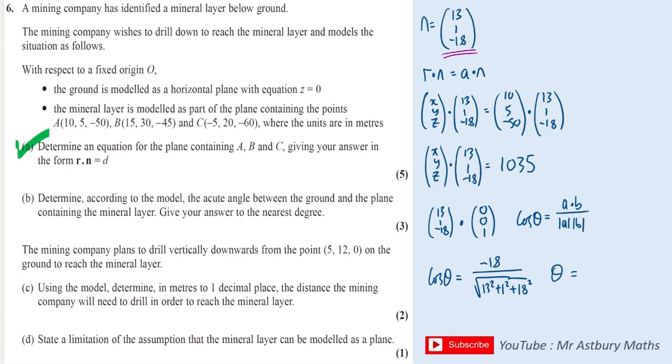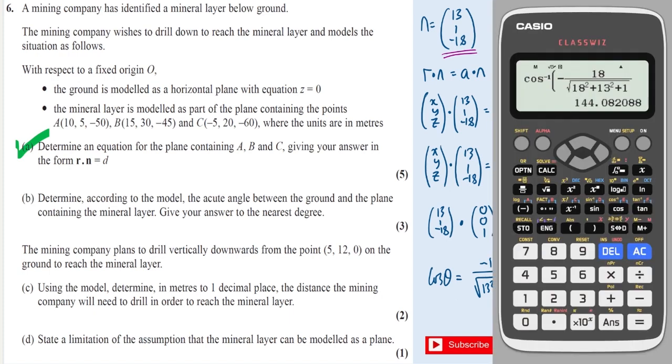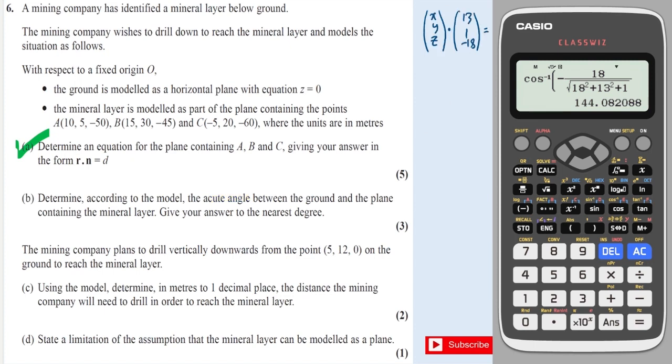So we've got an expression for cos theta, and then we can do cos to the minus 1 and get a value for theta. And this gives us 144, but the question did specifically say it wanted an acute angle. And when two lines meet, if we get the obtuse angle come out, then the acute angle is just going to be 180 minus that. So we'll need to do 180 minus 144, and this will give me 36. So the acute angle is 36. That's part B done.